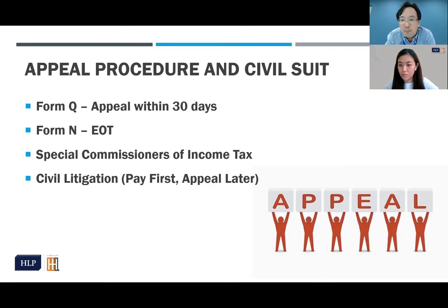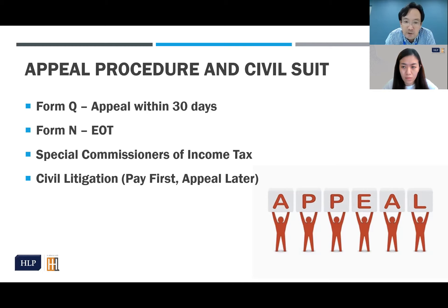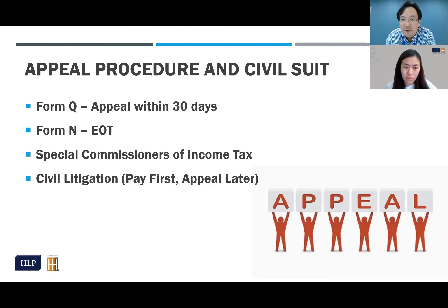After filing your appeal notice, the Director General of Income Tax has 12 months to decide on the appeal. During this period, parties can engage in negotiation. If the IRB agrees with your representations, they have the power to vary the assessment without going to court. In our experience, many times the IRB does not concede during this period.